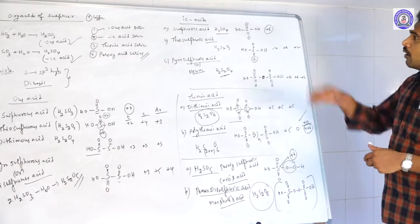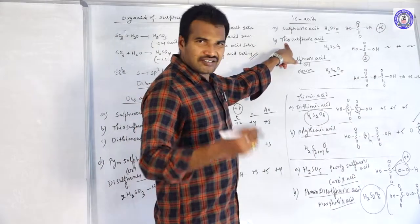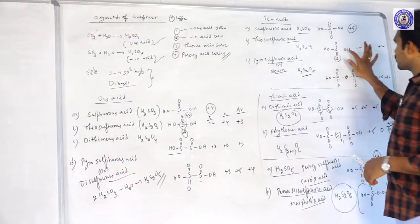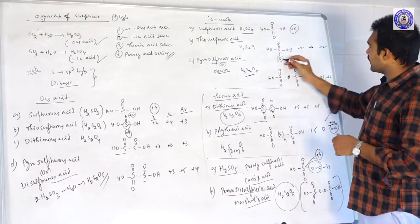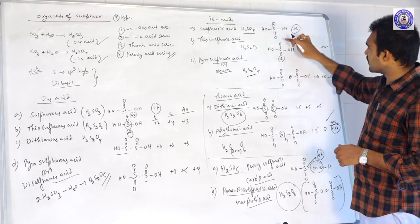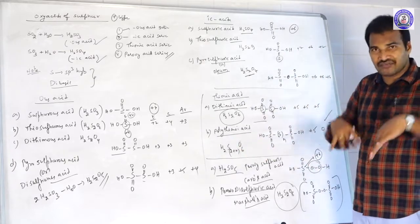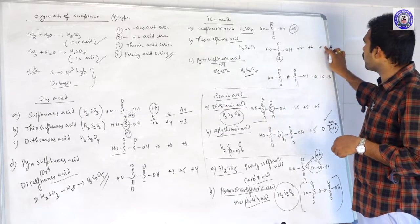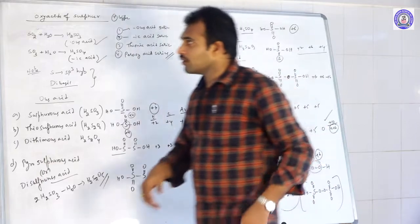Note: in Thiosulfuric acid (H2S2O3), the terminal sulfur has +2 oxidation state and central sulfur has +6, giving average = (+2 + 6)/2 = +4. Please note this correction.